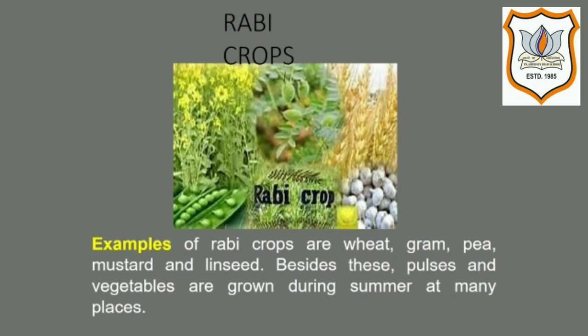Now come Rabi crops. Rabi crops are grown in the winter season. The time period of Rabi crops is generally from October to March. The sowing of Rabi crops begins in the beginning of winter, that is October or November, and the crops are harvested by March or April. Some examples of Rabi crops are wheat, gram, chana, peas, mustard, and linseed.